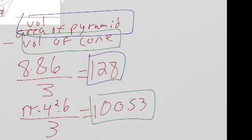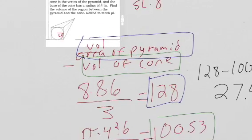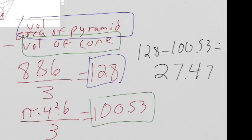Subtract the two now. 128 minus 100.53. That's going to be 27.47. Yes, 27.47, and it's inches, so we have to make sure we throw in inches cubed to our answer. That's our final answer.